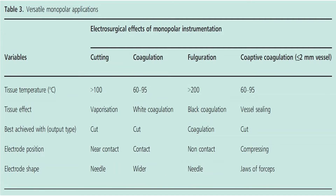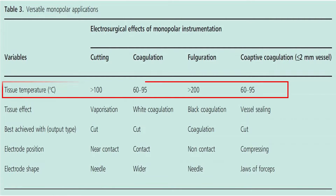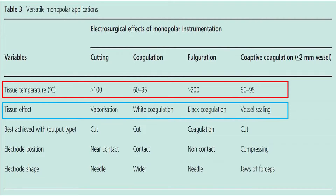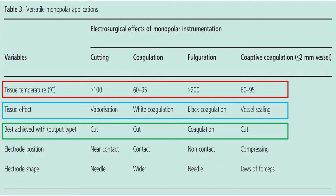This table shows different variables in versatile monopolar applications, including cutting, coagulation, fulguration, and coagulation of vessels less than 2 mm. The variables include temperature under each condition, and tissue effect — vaporization for cutting, white coagulation for coagulation, black coagulation for fulguration, and vessel sealing for bipolar coagulation. Output type best achieved: cutting with cut mode, coagulation with cut, fulguration with coagulation mode, and coagulation with cut.